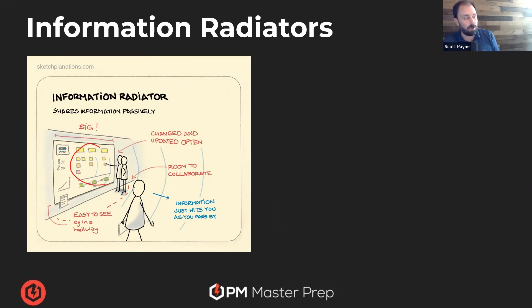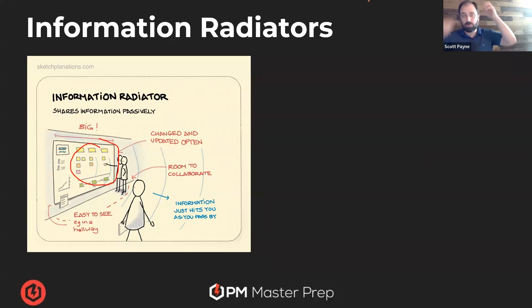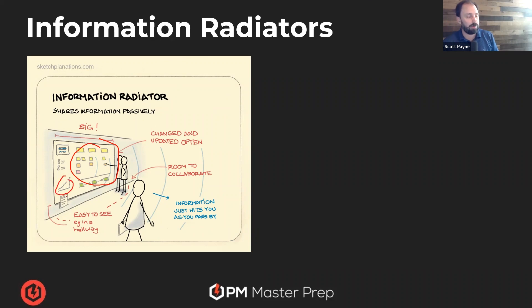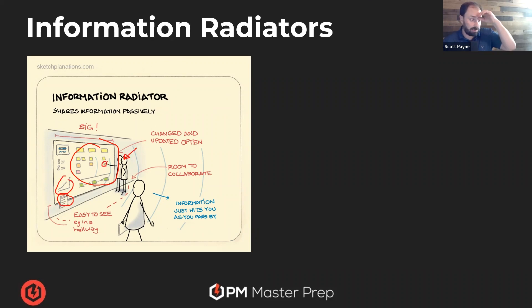Let's put the Kanban board up there. Maybe it's a ginormous screen so everybody can see what work's going. Maybe we see the roadmap, the burn up or burn down chart, a list of key issues, the backlog. Everybody can see it — it's really easy. Information radiation.